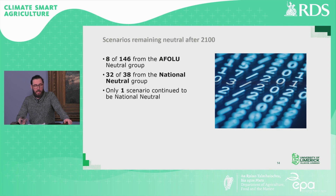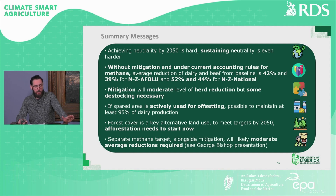In terms of assessing sustainability, we moved the target year out to 2100. After doing that, 8 of the 146 scenarios in the AFOLU group remain neutral, while 32 of the 38 in the national group remain neutral — however only one scenario maintained national neutrality status, meaning the other 31 were relegated to the AFOLU group. Achieving neutrality by 2050 is going to be very challenging, but it will be even more difficult to maintain. Without mitigation and under the current accounting rules for methane, the average reduction for dairy and beef was 42 and 39% for the AFOLU group and 52 and 44% for the national group.